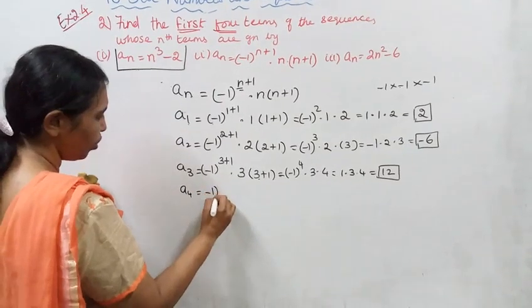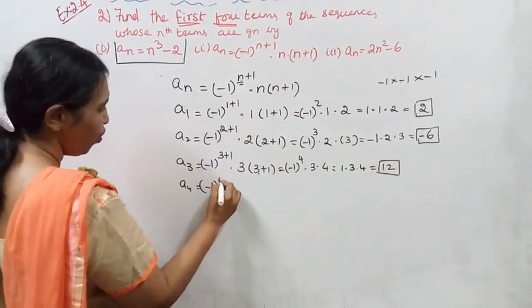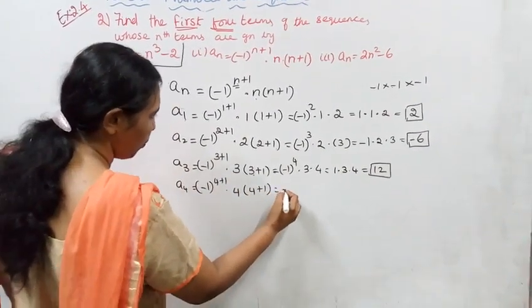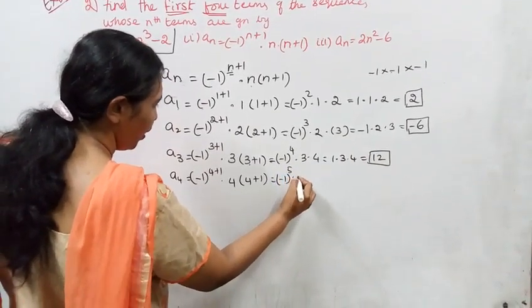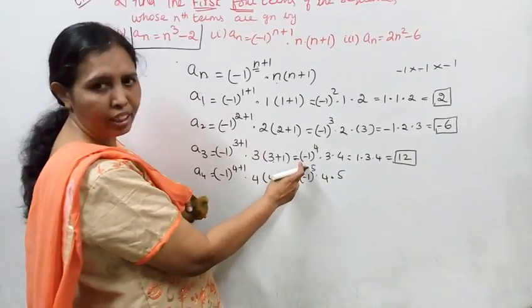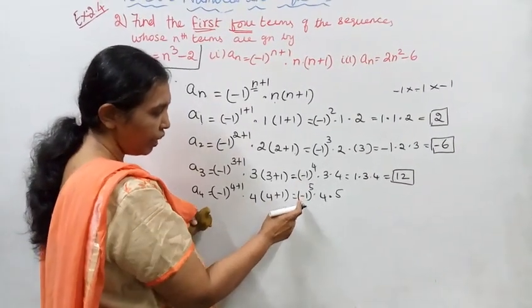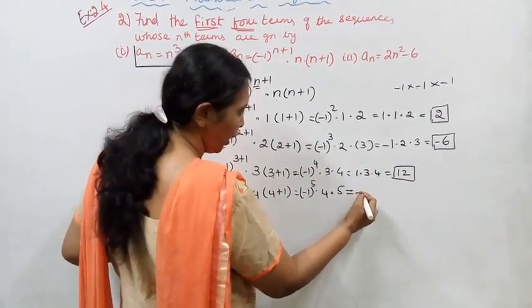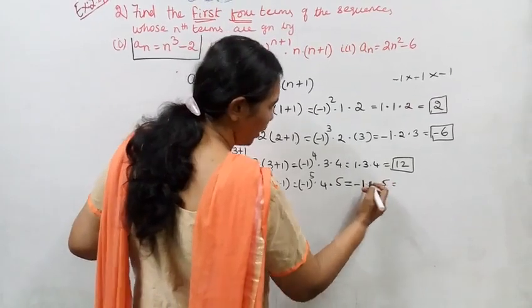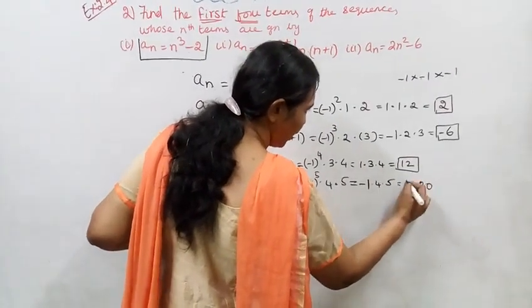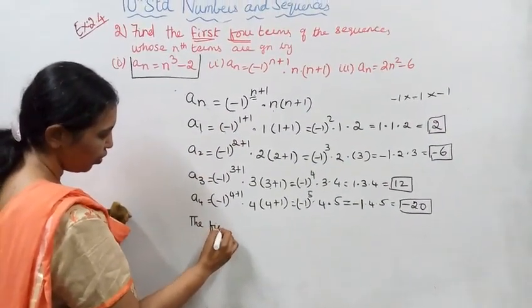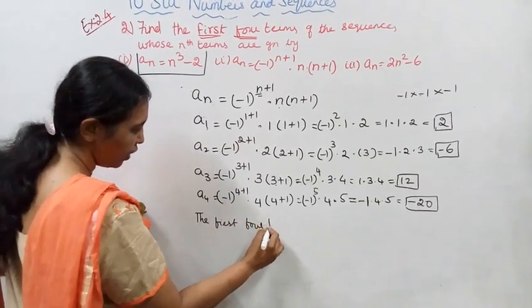a_4: minus 1 to the power 5, into 4, into 5. Power is odd, inside the bracket negative, so minus 1. 4 into 5 equals 20, times minus 1 equals minus 20.